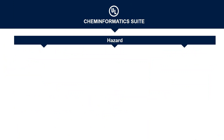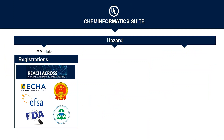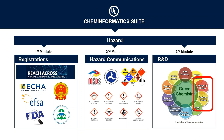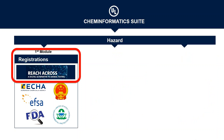Our Cheminformatics Suite will involve three different modules. Our first module will be for registrations, which we're going to talk about today. We're also building a model for hazard communications — for those who want to use predictions of GHS classifications for SDS sheets, MSDS sheets, hazard labeling, department of transportation manifestos, or product labels. Our newest module is what we're calling our green chemistry or R&D module, providing information that chemical R&D developers can use to design less hazardous molecules. Today we're focusing on our REACH Across module, designed to provide information needed for registrations, especially for ECHA REACH registration.